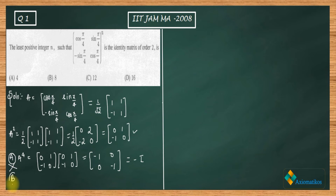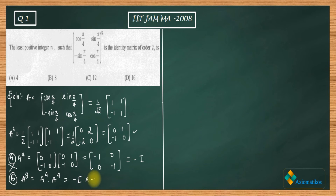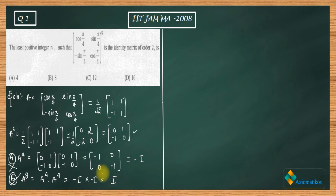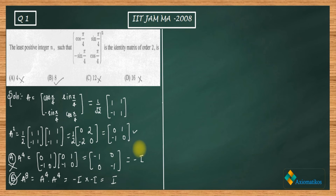Since A⁴ = −I, we have A⁸ = A⁴ · A⁴ = (−I)(−I) = I. So A⁸ equals the identity matrix, and option B (n = 8) is correct. Since n = 4 does not give the identity and n = 8 does, and there is no option smaller than 8 that works, the answer is 8. This takes just about a minute.